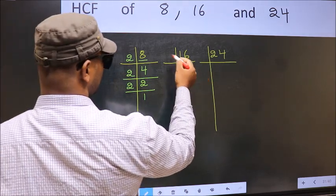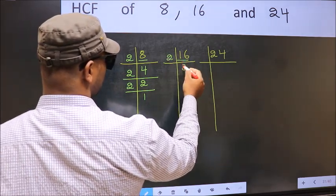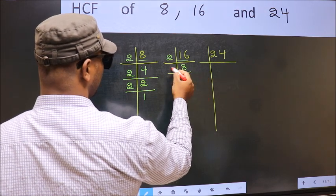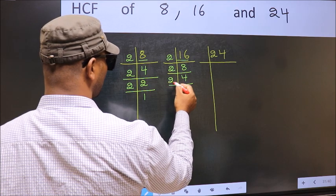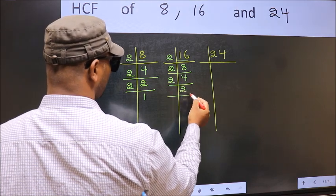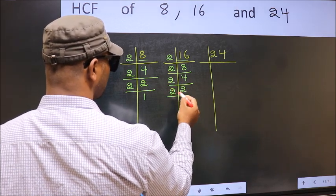16. 16 is 2 times 8 is 16. Now 8 is 2 times 4 is 8. Now 4 is 2 times 2 is 4. Now 2 is a prime number so 2 times 1 is 2.